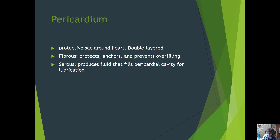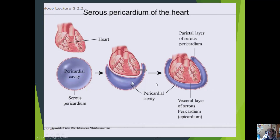The heart is surrounded by a serous membrane called the pericardium, and as with all serous membranes it is double-layered. We have an outer or parietal layer and an inner or visceral layer. The outer layer is subdivided into fibrous and serous portions. The fibrous parietal pericardium functions to protect, anchor, and prevent overfilling, while the serous portion produces fluid that fills the pericardial cavity for lubrication.